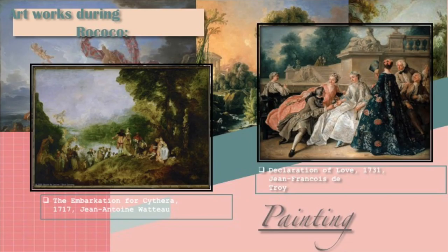Artworks during the Rococo period — examples. On the field of painting, we chose these two. The Embarkation for Cythera, or the Pilgrimage to the Isle of Cythera, 1717, by Jean Antoine Watteau, was perhaps his most famous artwork. The painting blends a Renaissance style landscape with an allegorical scene.